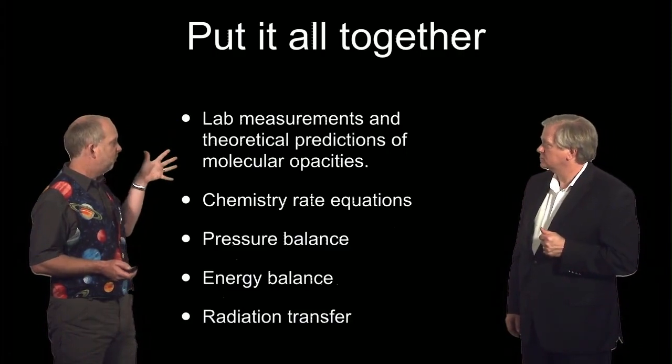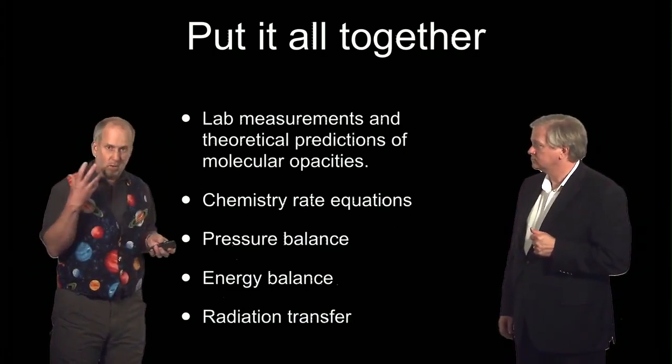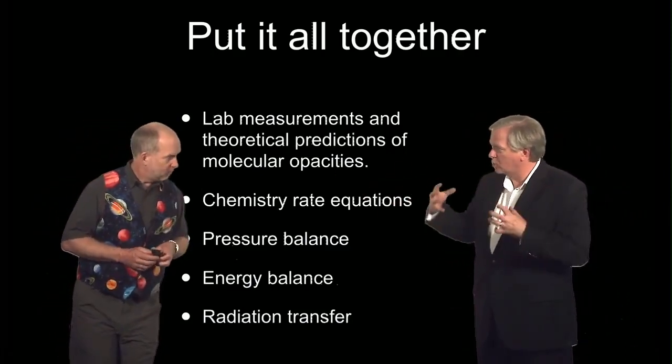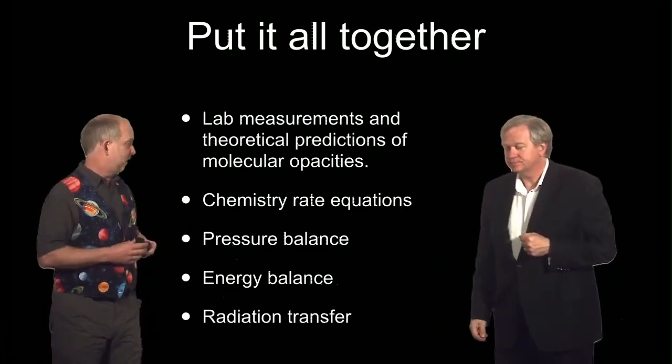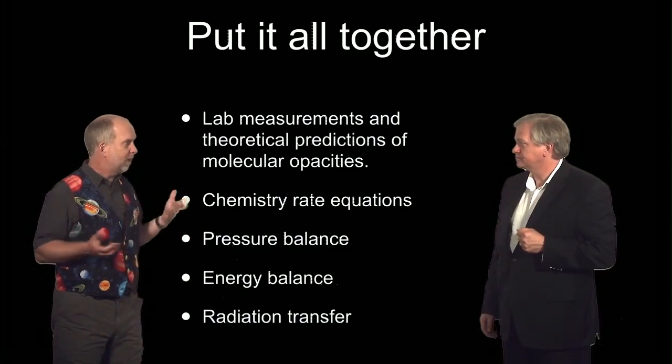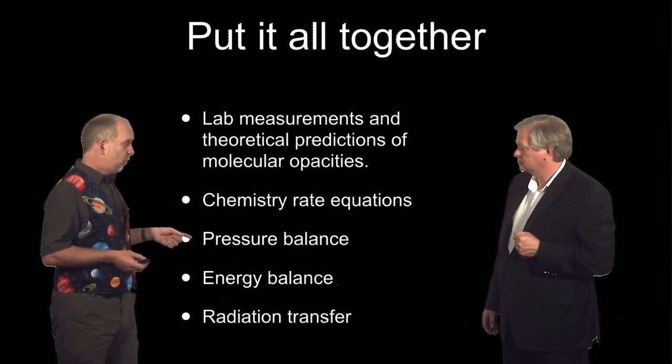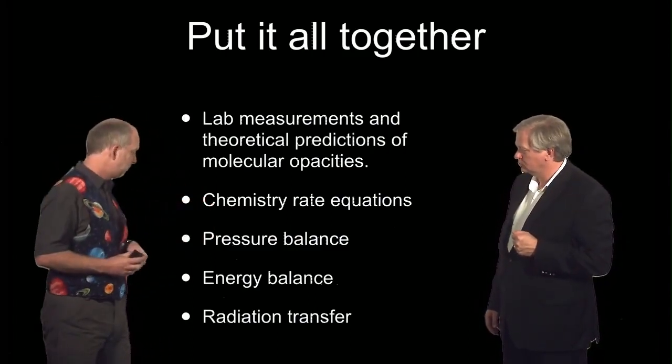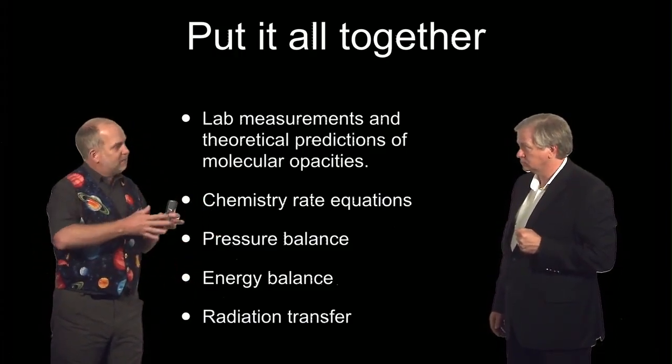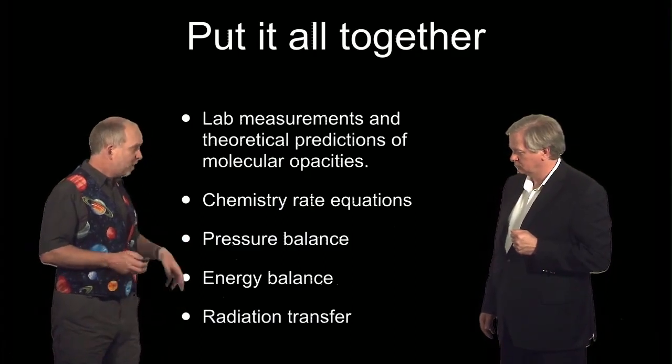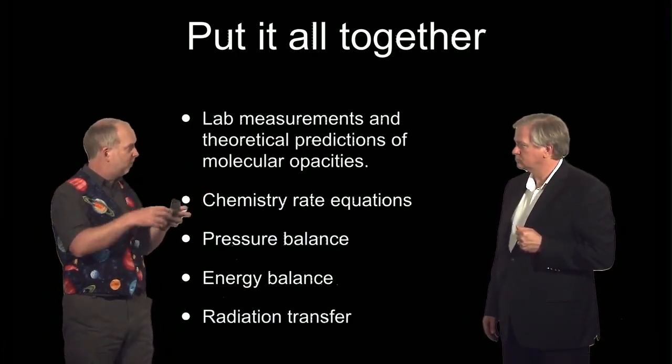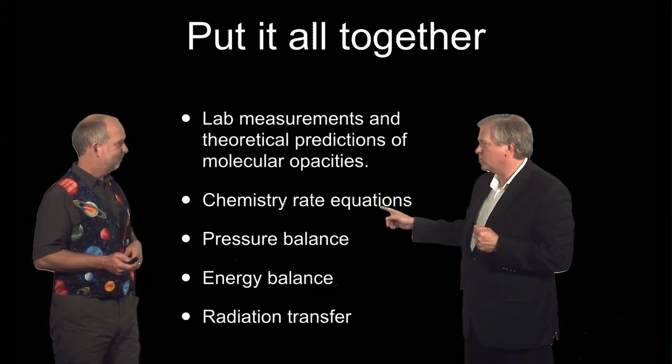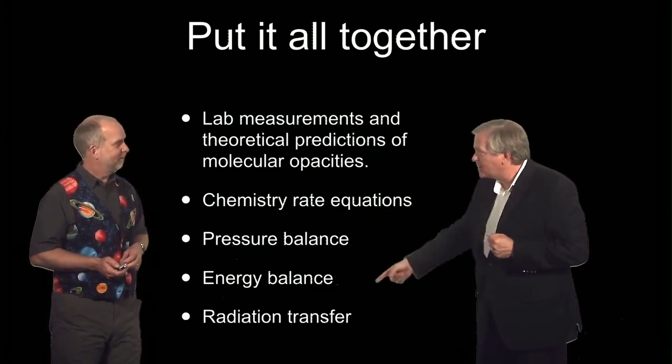So here are our ingredients. We know the lab measurements and theoretical predictions of molecular opacities. So we can estimate if you have so much methane at this temperature and this pressure, what it will do. And so when you say opacities, that's how much of the light it absorbs as it's trying to go through the material. And it depends very much on the wavelength. We've got the chemistry rate equations, which again we kind of know. We have some very clever chemists around. We've got pressure balance. We know that the pressure must be such that the top of the planet doesn't collapse down or expand out. We have energy balance, law of conservation of energy. The heat leaking out must change the internal energy. And we have radiation transfer. So we're looking at radiation coming from one place to another. And it depends on what molecules you've got, what gets through. Right. So this depends on that, but also what exists here. So you've really got to do the whole thing simultaneously.